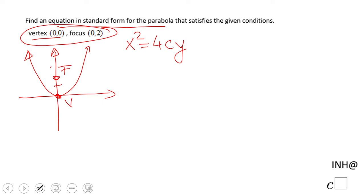Okay, this is an open up, which means c will be nothing else than this positive 2. So we end up with x squared equals 4 times 2 times y, or x squared equals 8y.